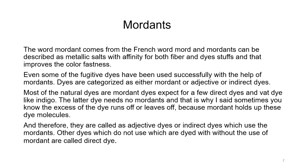Dyes are categorized as either mordant, adjective, or indirect dyes. Most of the natural dyes are mordant dyes, excepting a few direct dyes and vat dyes like indigo. Mordants have the capability to attach to both the dye stuff and the fiber or fabric, and that is why they are called adjective dyes or indirect dyes. Dyes which do not use a mordant are called direct dyes.